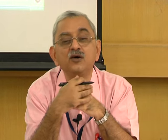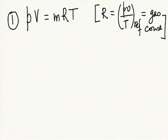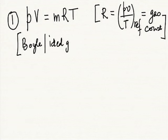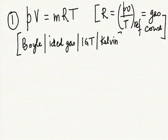Since R depends on the individual gas, it is also called the specific gas constant, characteristic gas constant, or particular gas constant — sometimes written as R_H2 for hydrogen, R_O2 for oxygen, etc. This still does not tell us how the energy of a gas is related to its state. Joule did experiments with gases — his famous porous plug or free expansion experiments — and discovered that U of an ideal gas is a function only of temperature.